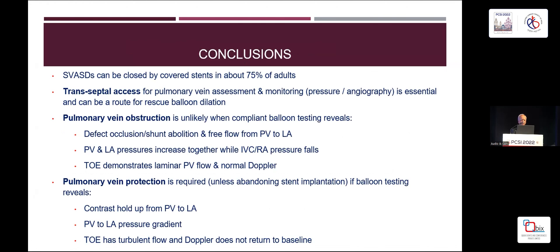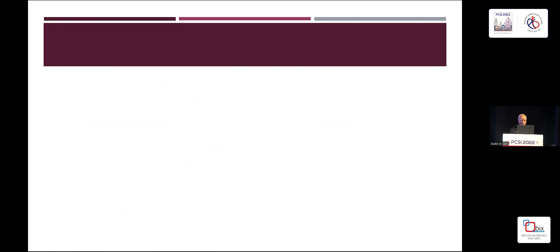To conclude: about three quarters of our patients have been suitable for sinus venosus defect closure with covered stents. Transeptal access is important and helps. Pulmonary vein obstruction is unlikely when compliant balloon testing reveals defect occlusion and free flow from the pulmonary vein to the left atrium. Pressures need to be demonstrated in the pulmonary vein and left atrium — both will increase without a gradient. But if there is a residual gradient or contrast holdup in the pulmonary vein when you inflate the balloon, and TOE shows turbulent flow, then either pulmonary vein protection is required or that patient should not be attempted.